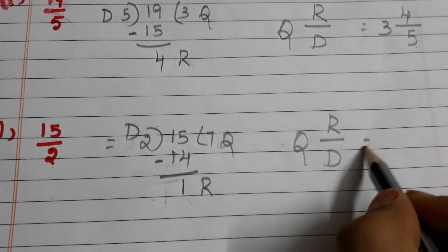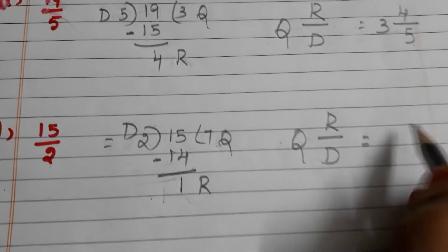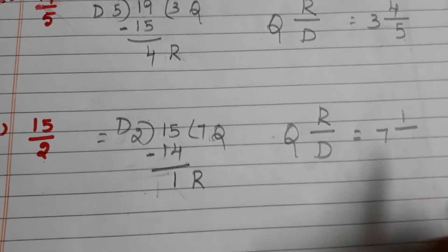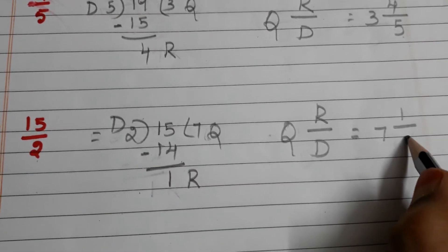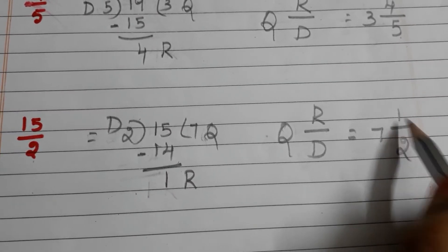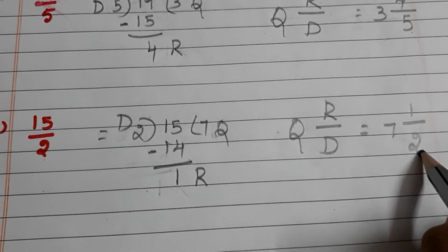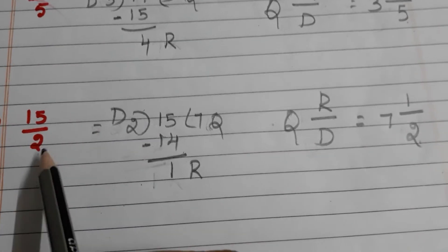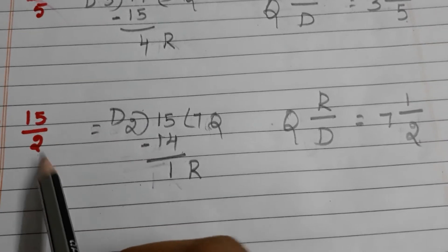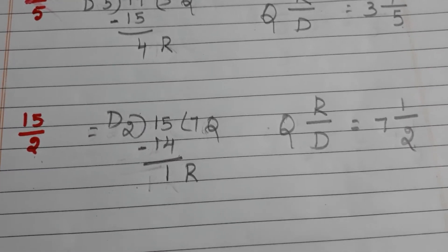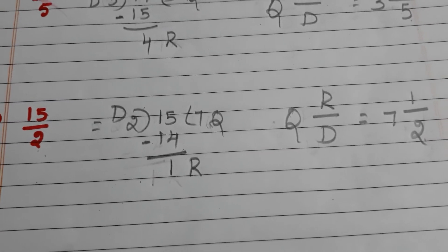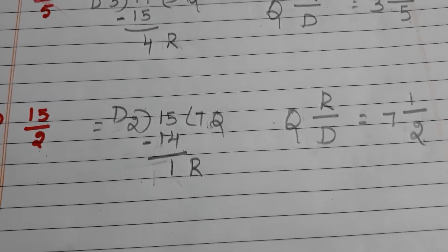What is the quotient? 7. What is the remainder? 1. What is the divisor? 2. So 7 and 1/2 is the mixed fraction for the improper fraction 15 by 2. In this way we have to convert improper fractions into mixed fractions.